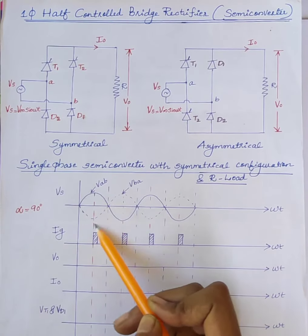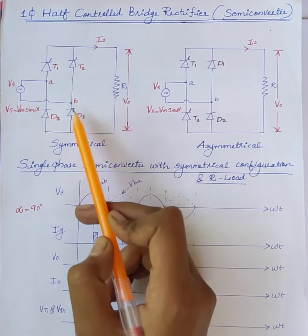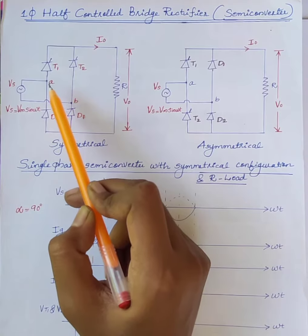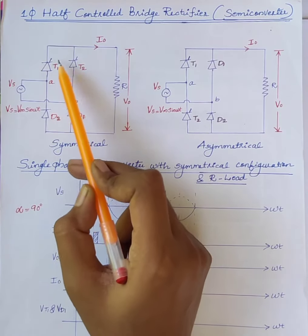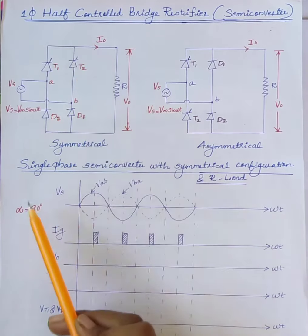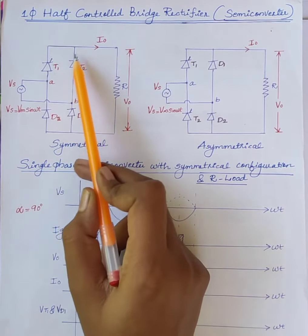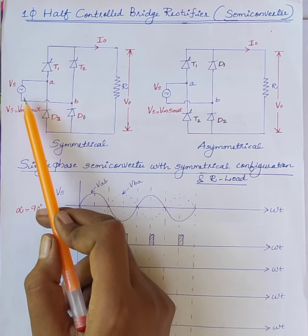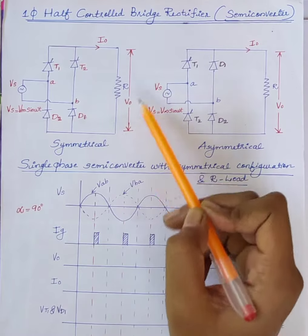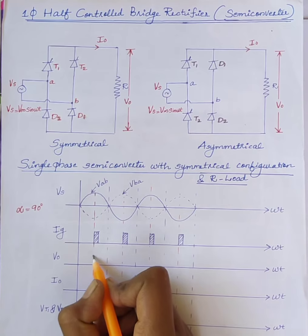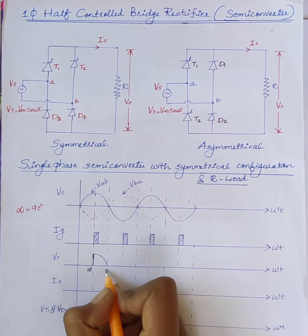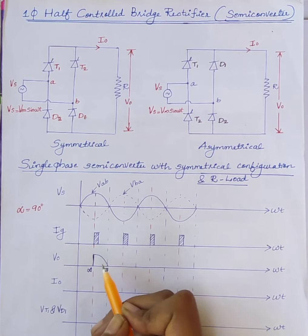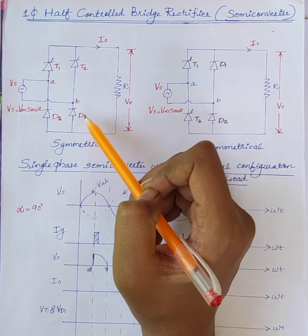During the positive half cycle of the AC supply, thyristor T1 and diode D1 are forward biased, and thyristor T1 is in the forward blocking mode. When SCR T1 is triggered at a firing angle alpha equal to 90 degrees, current flows through the path: source → T1 → diode D1 → back to source, and the source voltage appears across the load. V0 spans from alpha to pi. At omega t equal to pi, natural commutation occurs and thyristor T1 and diode D1 are turned off.